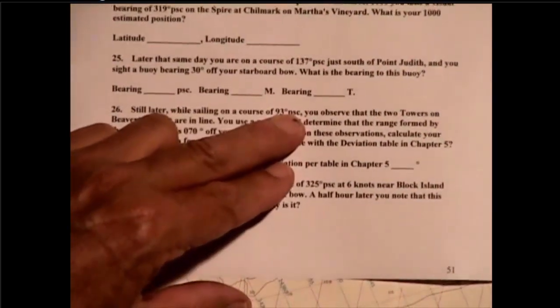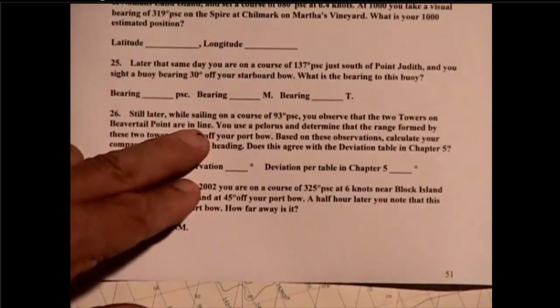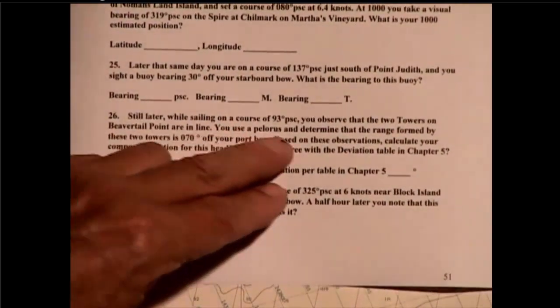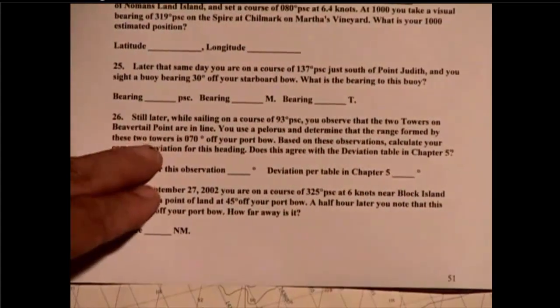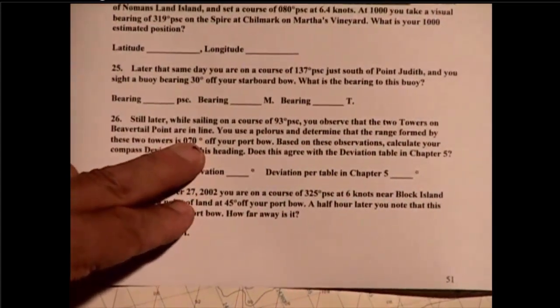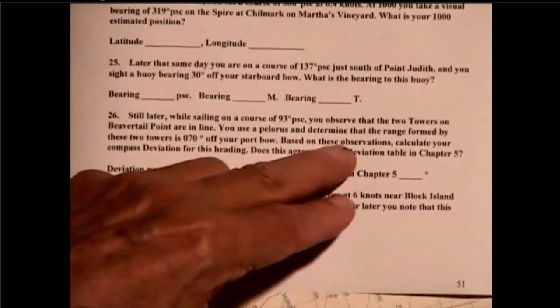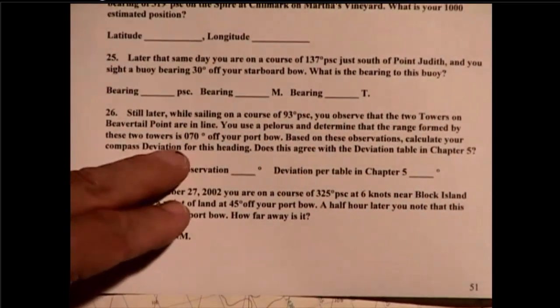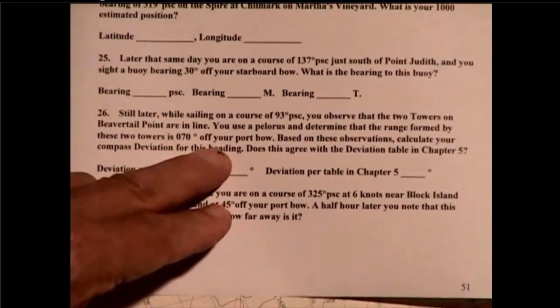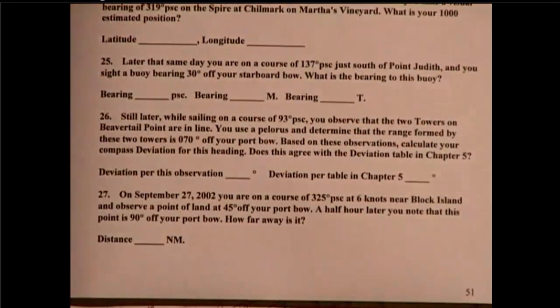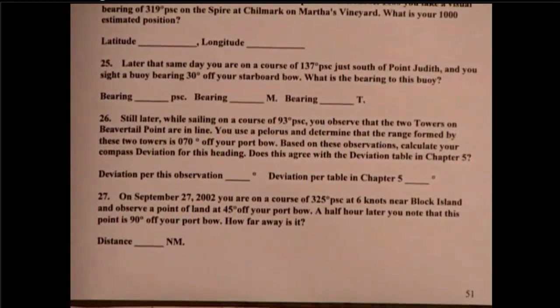It says: while sailing on a course of 093 PSC, you observe that two towers on Beaver Tail Point are in line. You use a Polaris and determine that the range formed by these two towers is 70 degrees off your port bow. Based on these observations, calculate your compass deviation for this heading, and does this agree with the deviation table given in chapter 5?